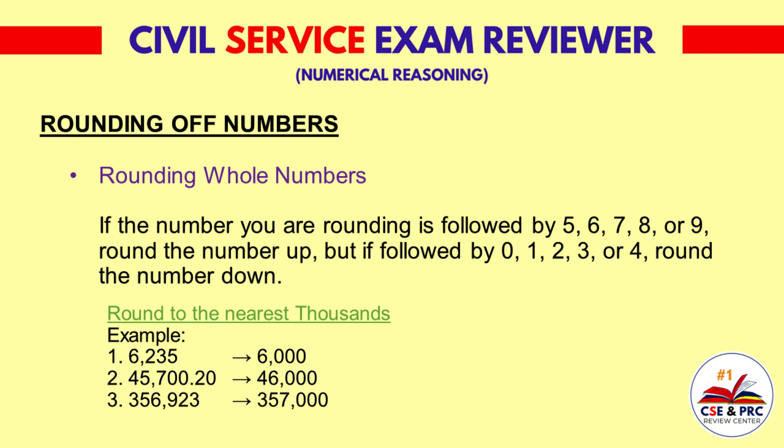Round to the nearest thousands. Example 1: 6,235 — the result will be 6,000. Example 2: 45,700.20 — the result will be 46,000. Example 3: 356,923 — the result will be 357,000.